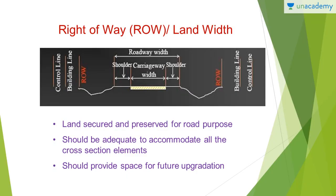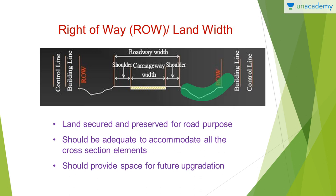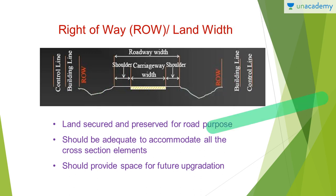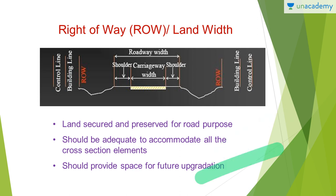Now let us have a look at the right of way, that is ROW, also known as land width. It is basically provided next to the shoulders on each side. Land secured and preserved for road purposes is basically the right of way. It should be adequate enough to accommodate all the cross section elements and should also provide space for future upgradation.